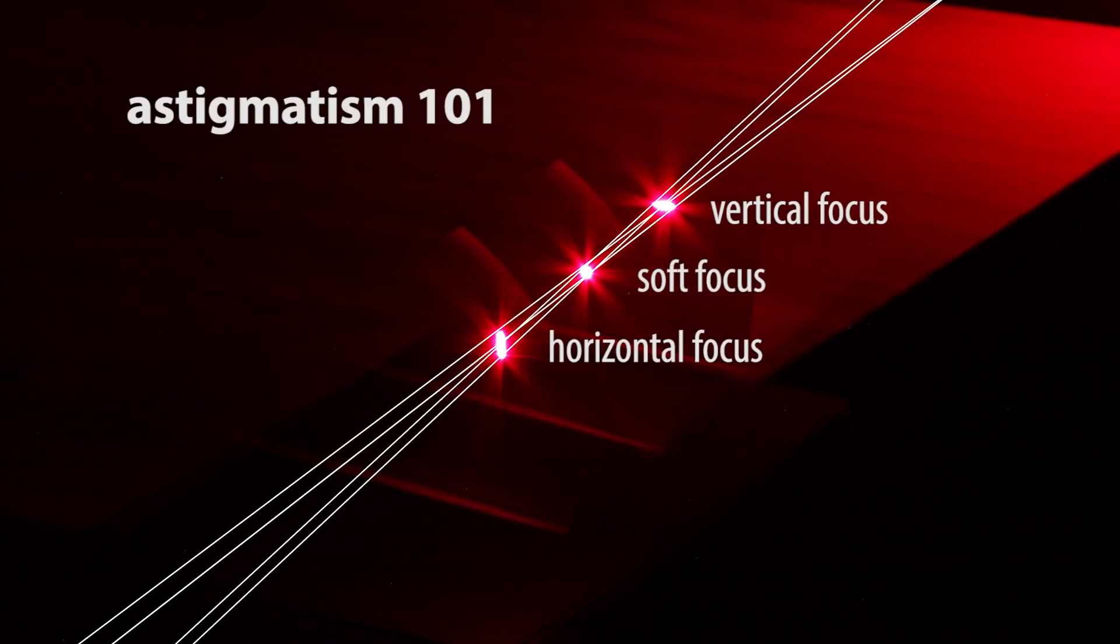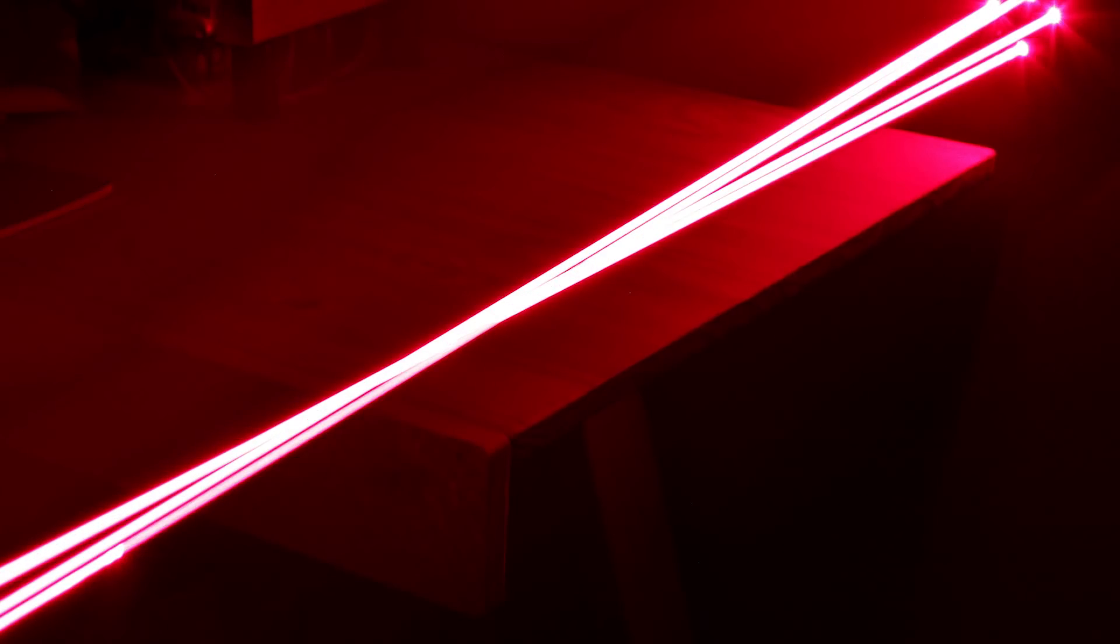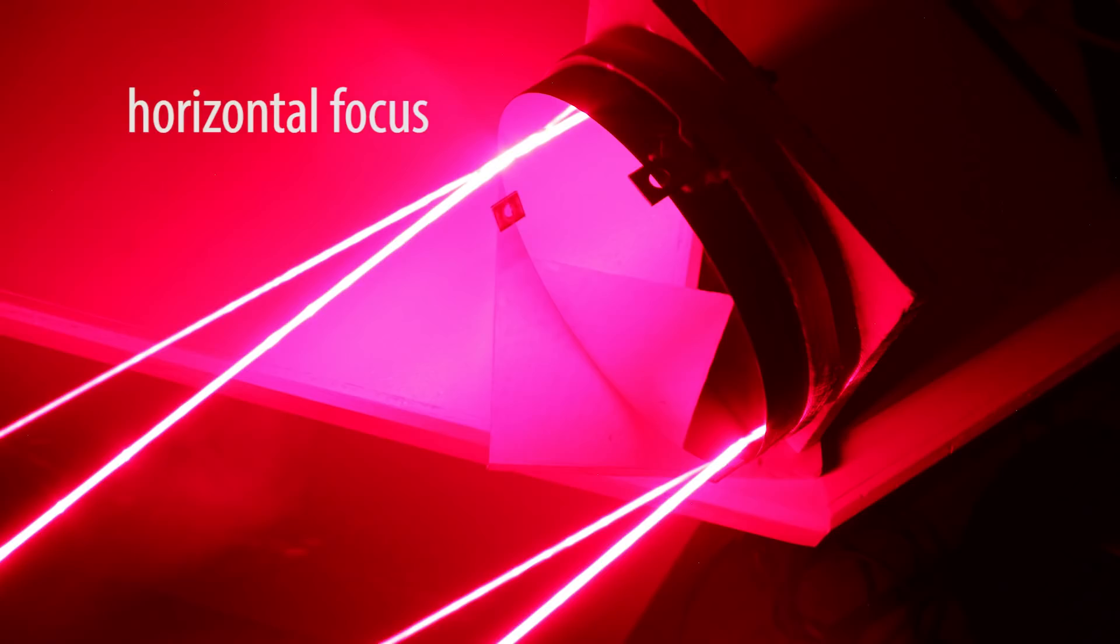An astigmatism leads to a soft focus, which is especially bad for a Schlieren setup, where we depend on small differences in refraction angle to make all the difference. Also lasers.